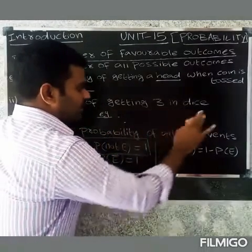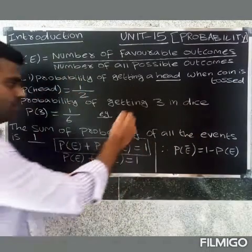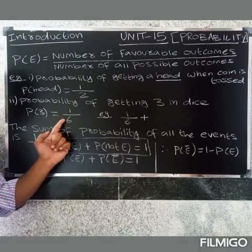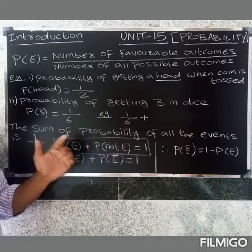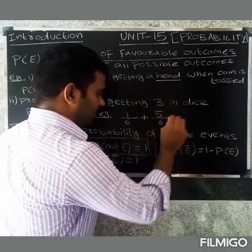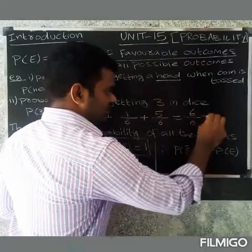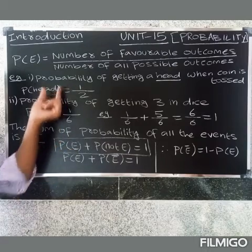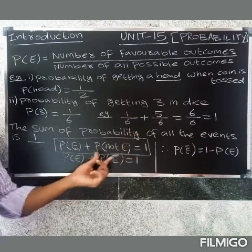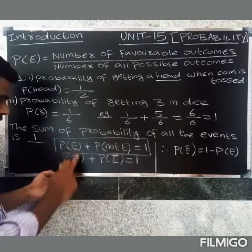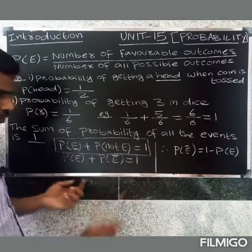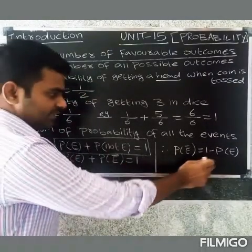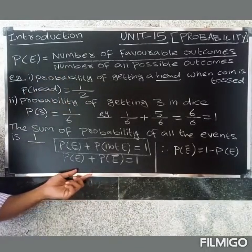For a dice, the probability of getting 3 is 1/6. So P(not E) covers 1, 2, 4, 5, 6 — that is 5/6. So 1/6 + 5/6 = 6/6 = 1. Therefore, P(E) = 1 minus P(not E).